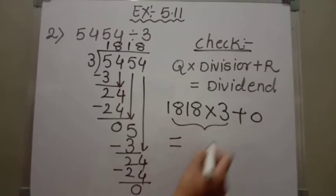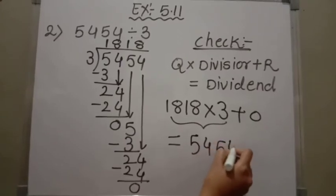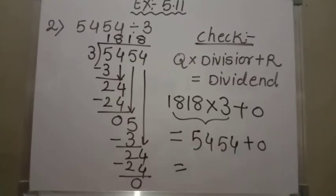Children, if you multiply these 2 numbers you will get the product 5454 plus 0. When you add 0 to any number you will get the same number.